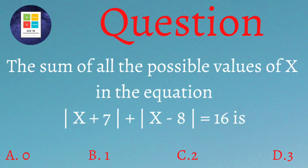The question is: the sum of the possible values of x in the equation |x + 7| + |x - 8| = 16 is? We are provided four options: option A is 0, option B is 1, option C is 2, and option D is 3. I would like you to try this question first by yourself and then come to this video for the solution.